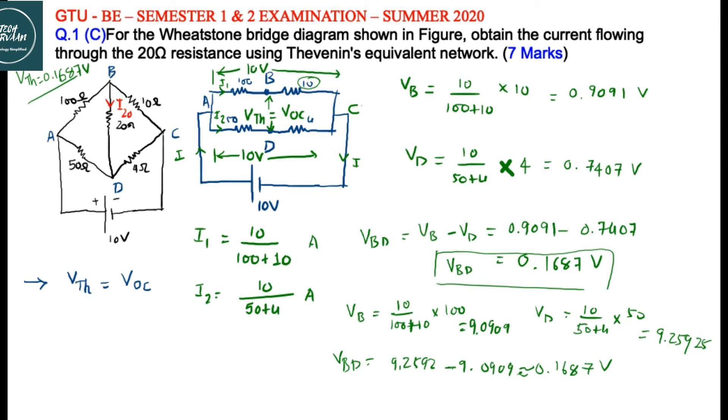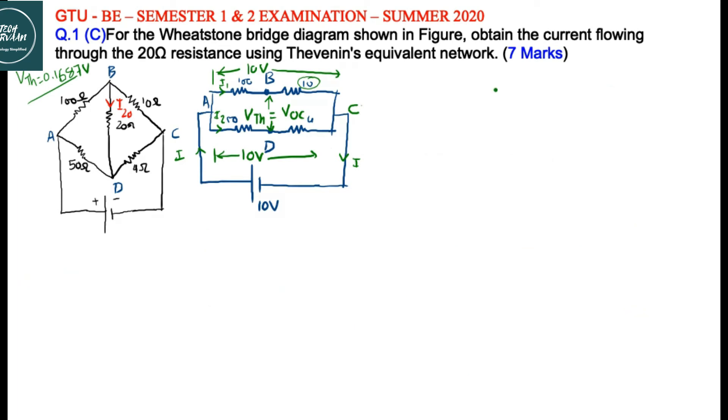Now we will calculate our equivalent, Thevenin's equivalent resistance. For Thevenin's equivalent resistance, the voltage source needs to be replaced with its internal resistance. If we replace the voltage source with a short circuit, then the circuit diagram will be like this: 100 ohm, 10 ohm, 50 ohm, 4 ohm. So if we will draw it, then we need R equivalent across these two terminals BD.